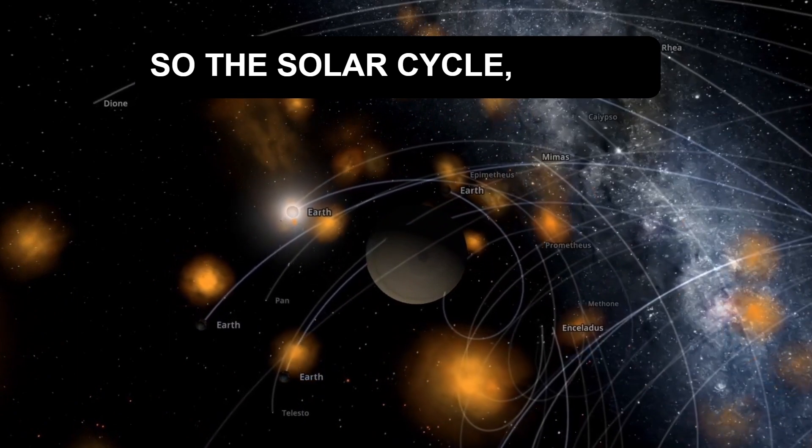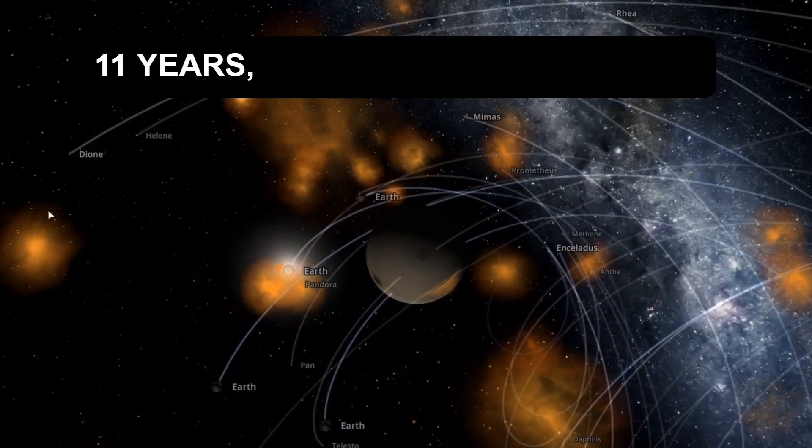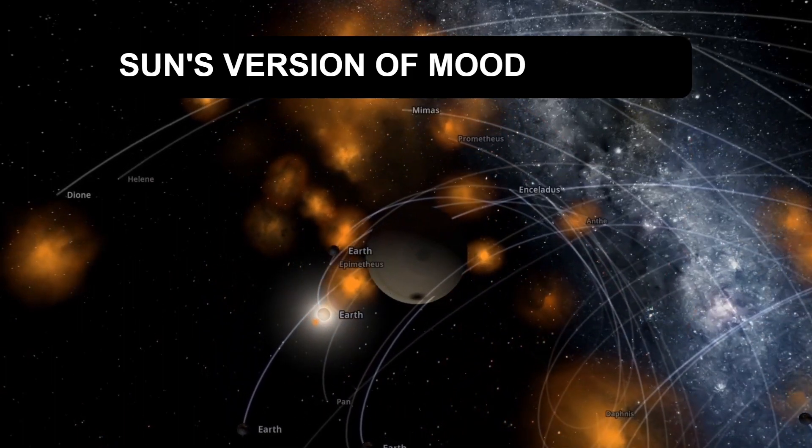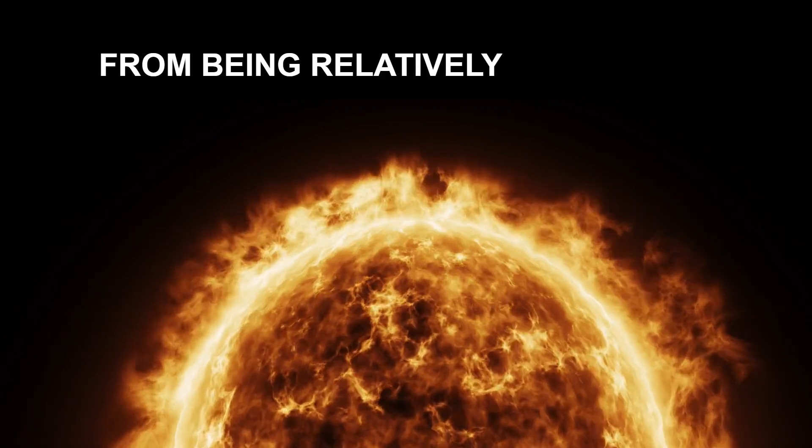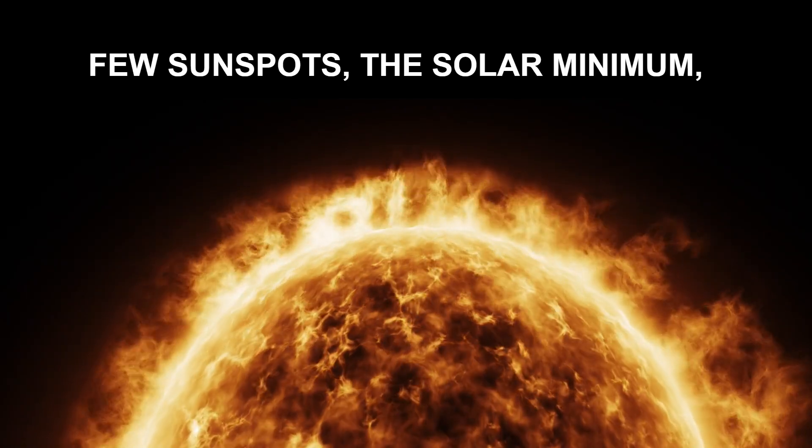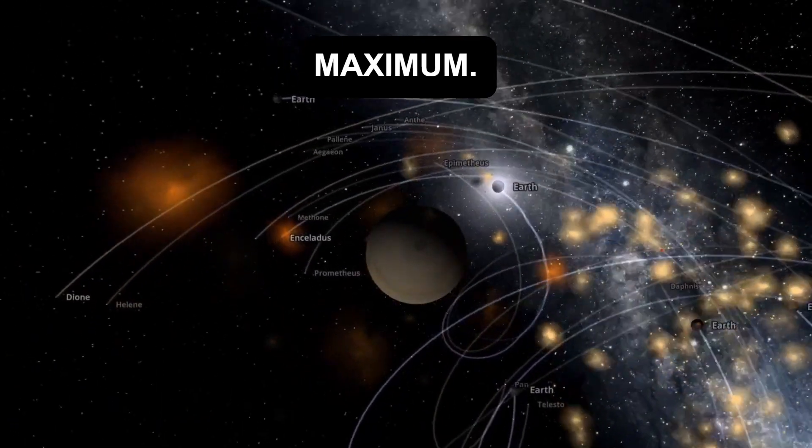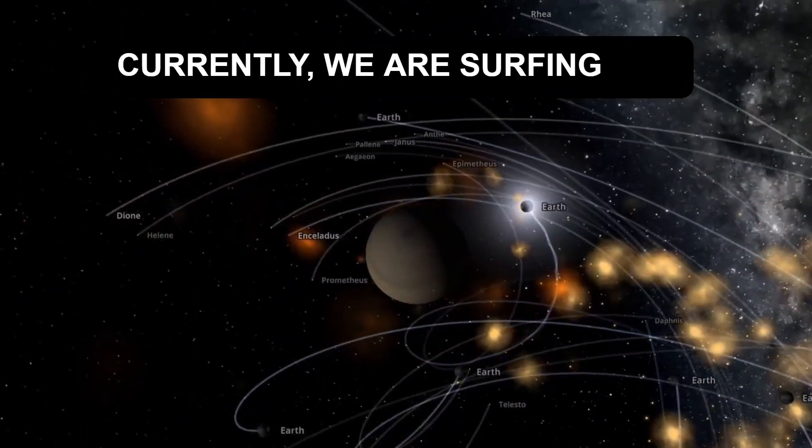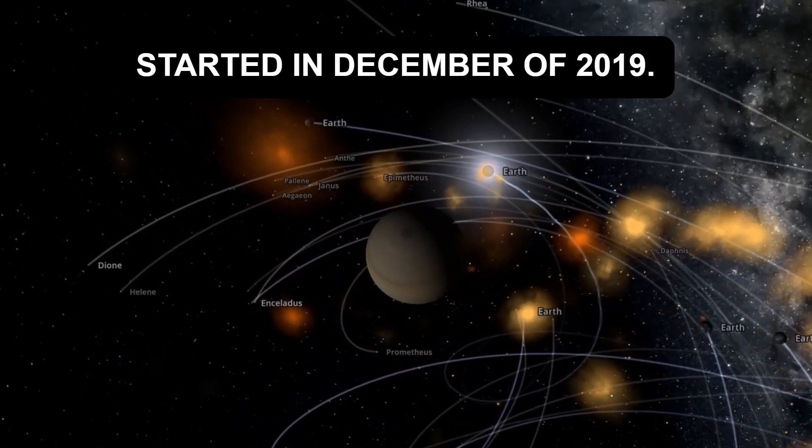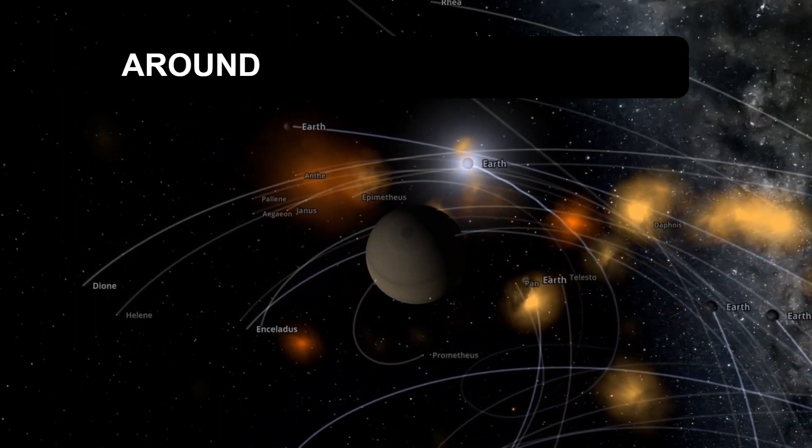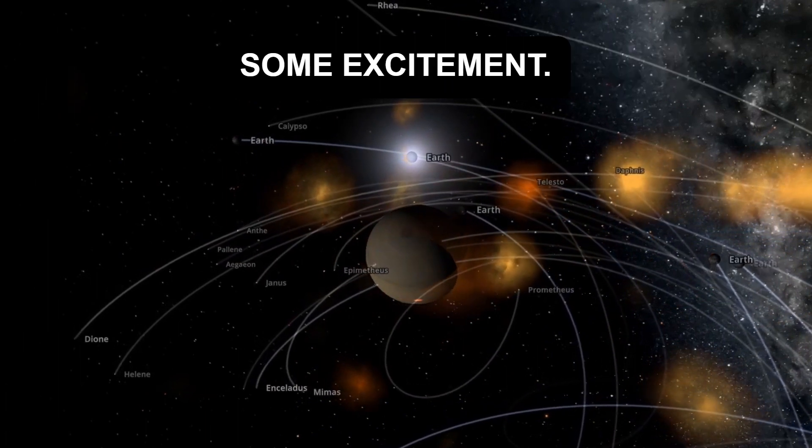So the solar cycle, or the sunspot cycle, lasts about every 11 years, and think of this as the sun's version of mood swings. Every 11 years or so, it swings from being relatively calm with few sunspots, the solar minimum, to being a fiery ball of chaos with tons of sunspots, the solar maximum. Currently, we are surfing the wave of solar cycle 25, which started in December of 2019. The sun's gearing up to hit its peak around the end of 2024 or the beginning of 2025, so get ready for some excitement.